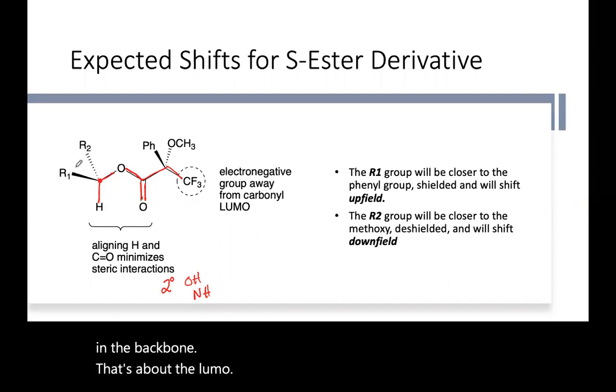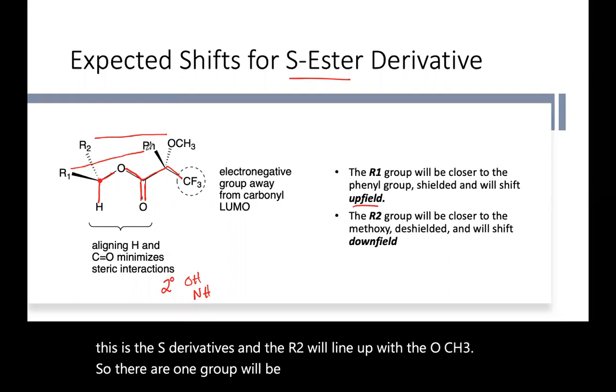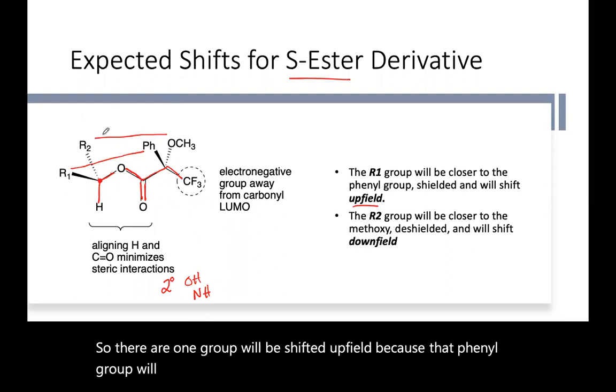So then what happens is the R1 group will line up with the phenyl if this is the S derivative and the R2 will line up with the OCH3. So the R1 group will be shifted upfield because that phenyl group will shield it and the R2 group will move downfield because it's next to the oxygen.